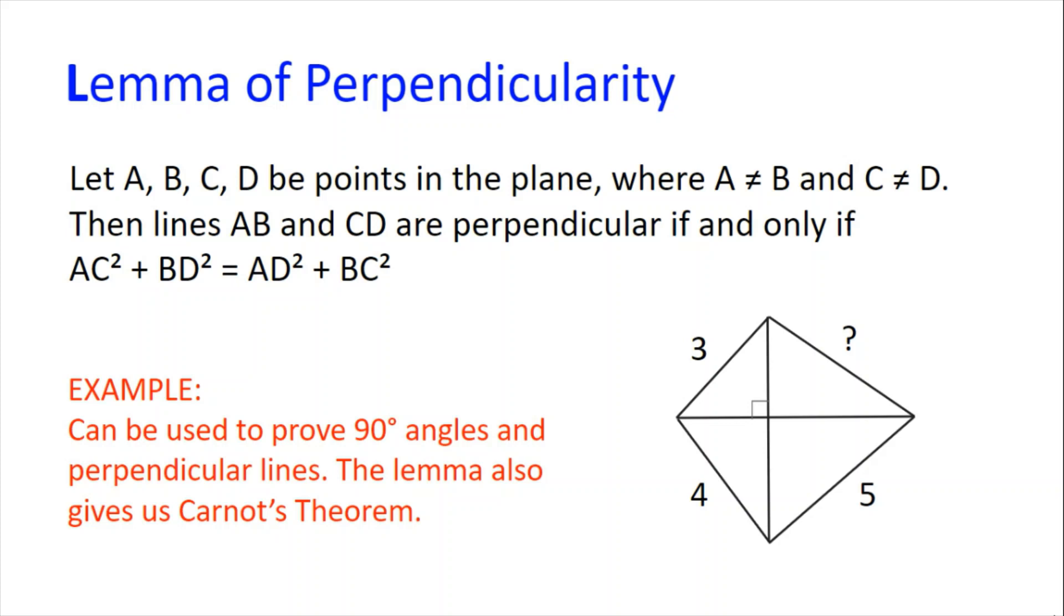If we look at the diagram on the right, we see a quadrilateral whose diagonals are perpendicular to each other and three of the side lengths of 3, 4 and 5. We need to find the final side length.